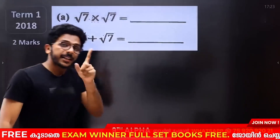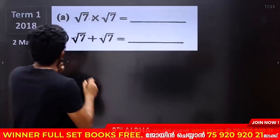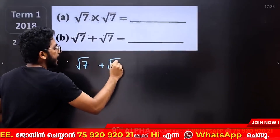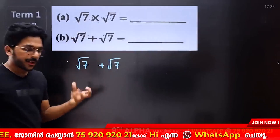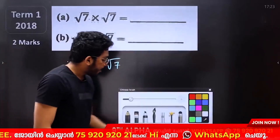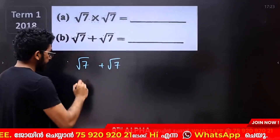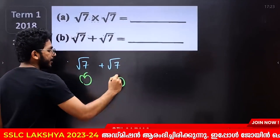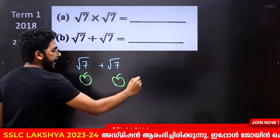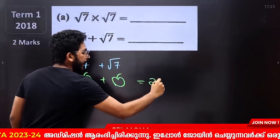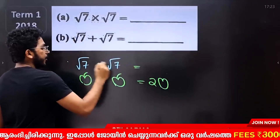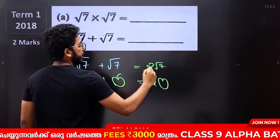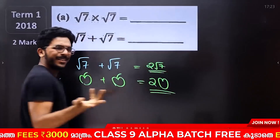Let's do this: root 7 plus root 7. We call root 7 a papaya. One papaya plus one papaya — how many papayas? Two papayas. So root 7 plus root 7 equals 2 root 7. Simple.